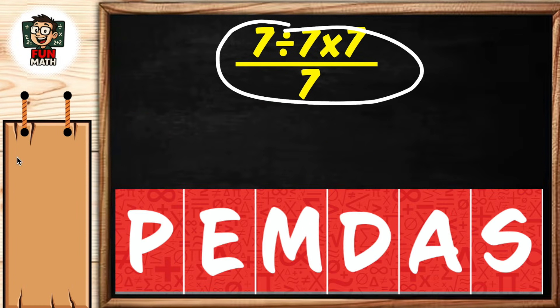PEMDAS. P stands for parentheses, E stands for exponent, M stands for multiplication, D stands for division, A stands for addition, S stands for subtraction. We have one more feature here: there is no order between multiplication and division operations.